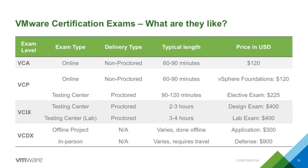So what are the exams like? VCAs are completely unproctored — you can take them at home, 60 to 90 minutes, and they're $120. For the VCP, you take the Foundations exam at home and then you have to go to a testing center for the proctored VCP exam, with a variety of exam centers available.